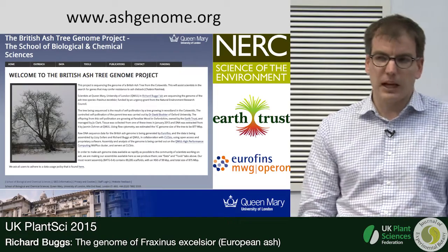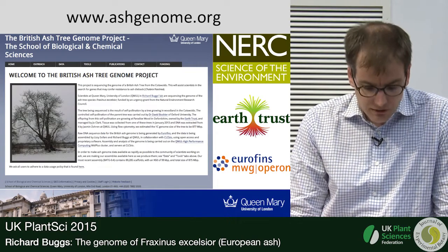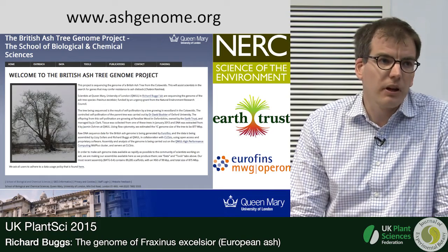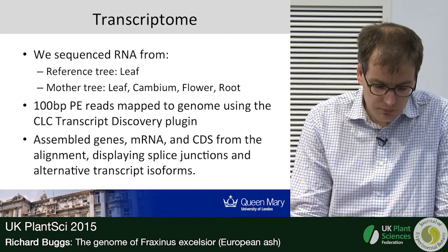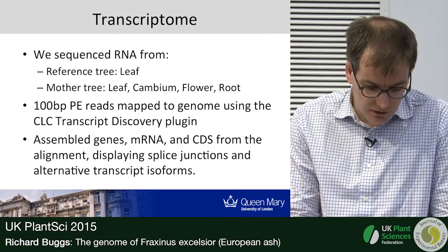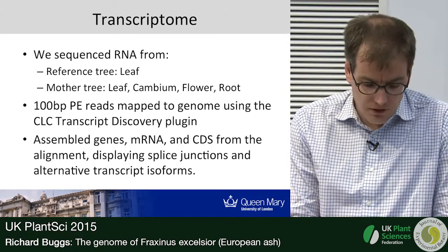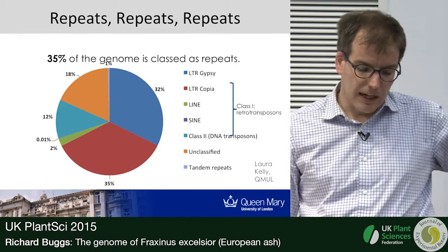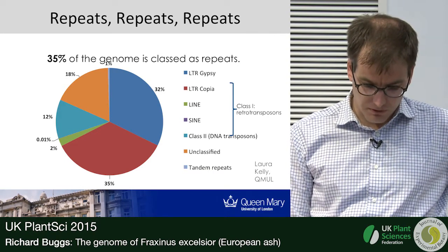We've made all the data available as we've generated it on our website, so other people working on ash dieback can use it. Ian Bancroft at York has been using it for work on association transcriptomics, trying to find candidate genes for low susceptibility to ash dieback. We also did transcriptome sequencing from the leaves of the small tree whose genome we sequenced, as well as flower tissue from its mother, which enabled us to annotate the coding regions of the genome very well. As expected for an angiosperm, 35% of the genome is repeats, with various classes of retrotransposons and other transposable elements.